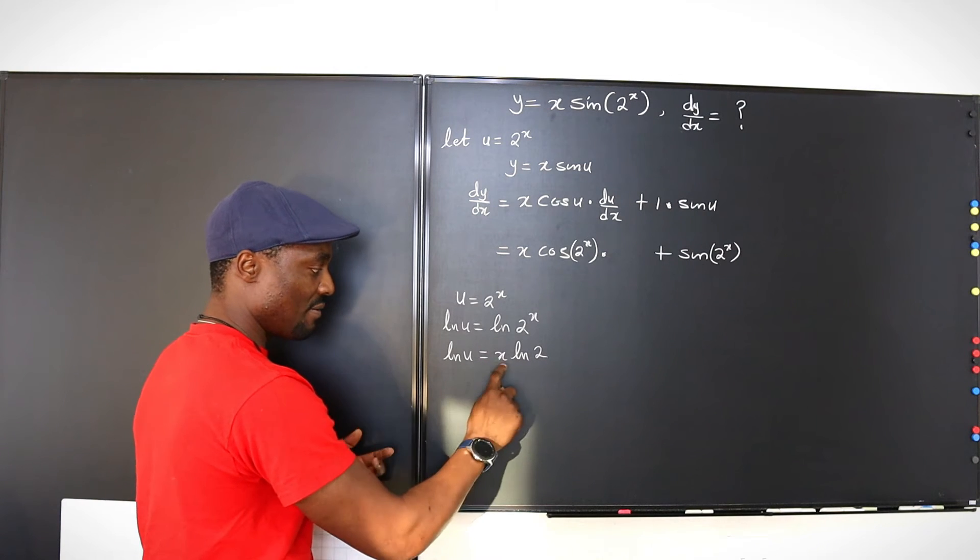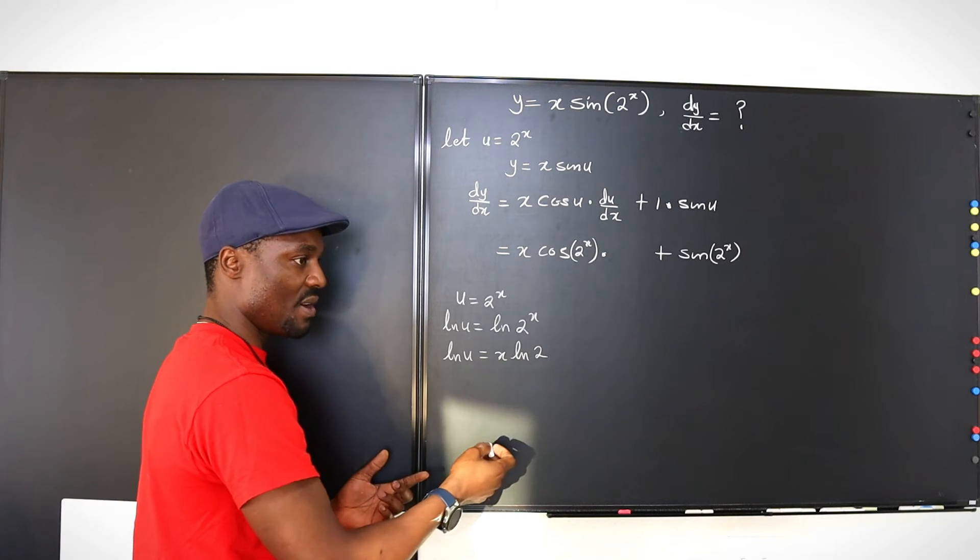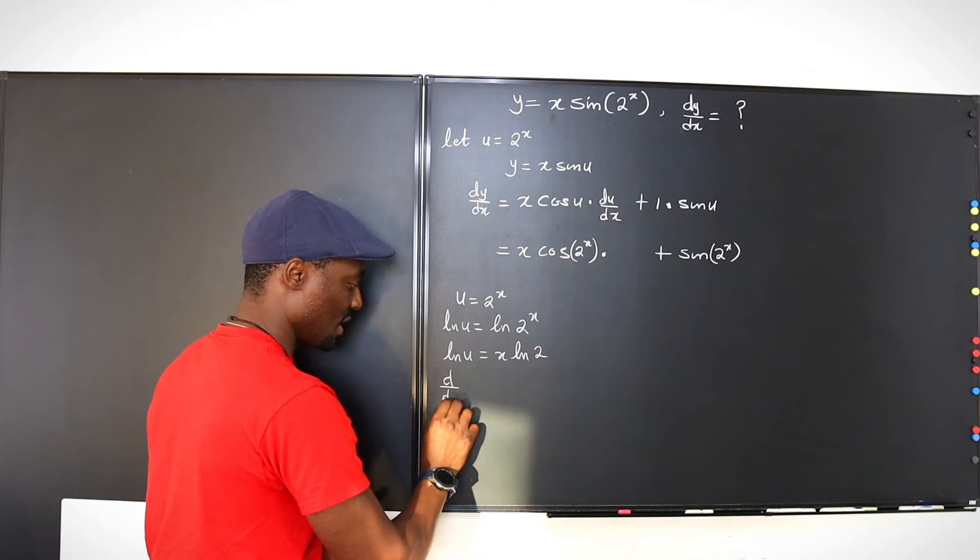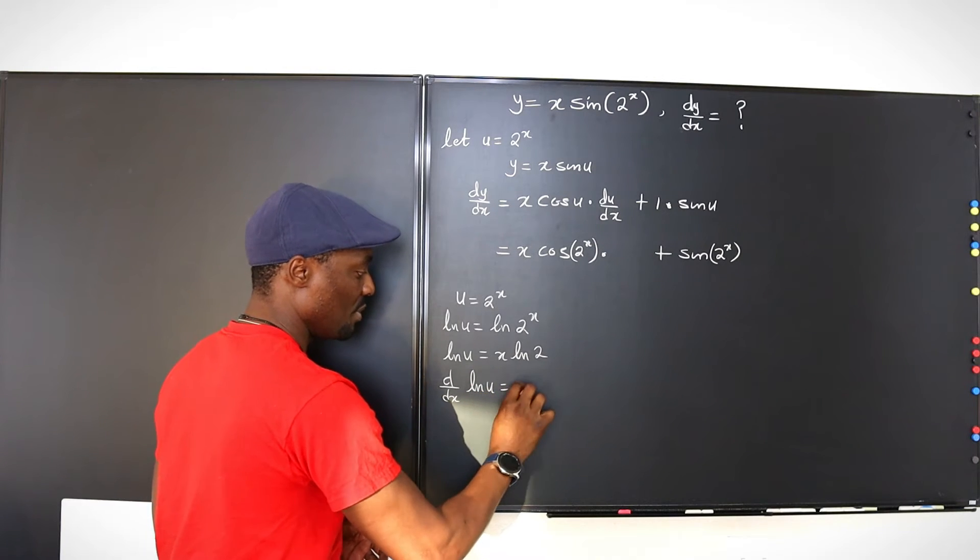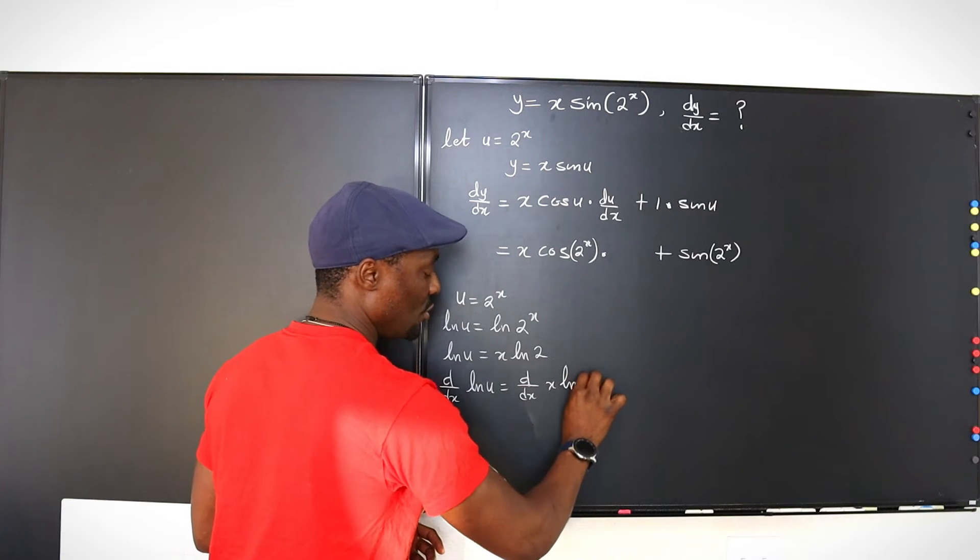At this point, you have, this is a constant, and this is a variable, we can differentiate both sides. So we can take the derivative of both sides, d dx of ln u will be equal to d dx of x ln 2.